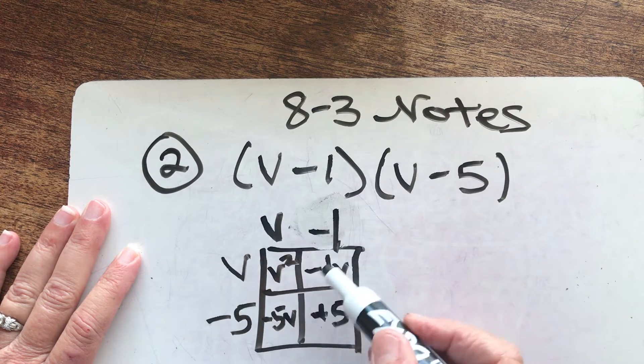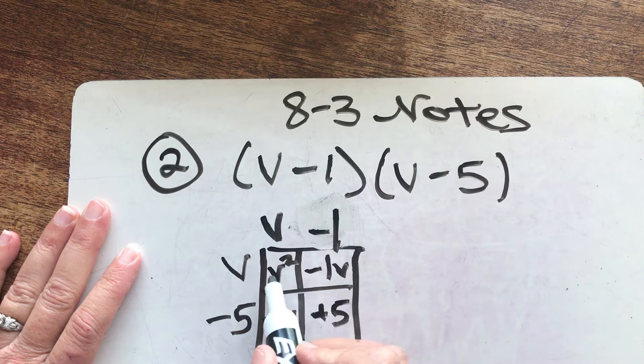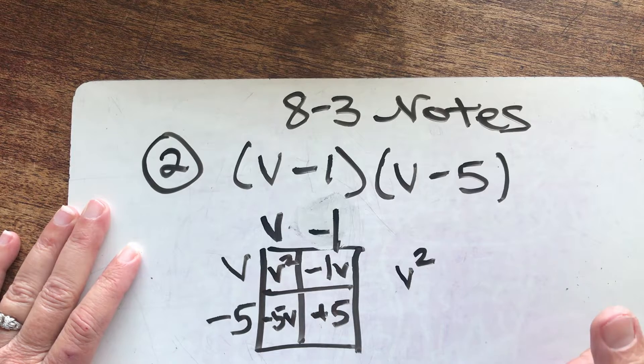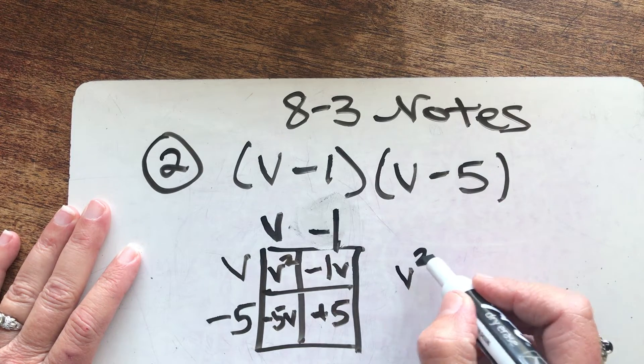I can see that I have like terms on the diagonal. So the first part of my answer, and yes, your answer should be in this order. It's called descending power of the variable. The highest power is first.